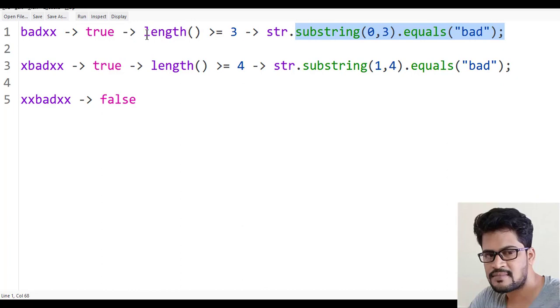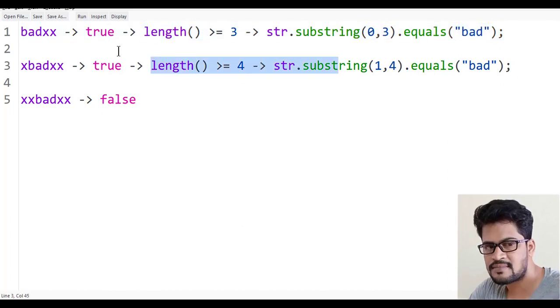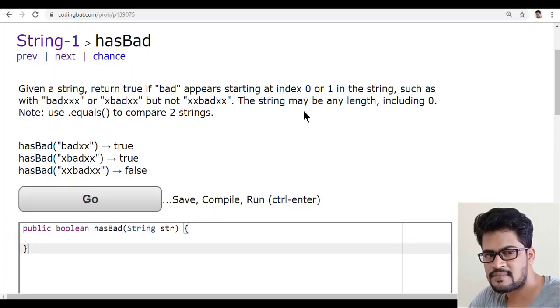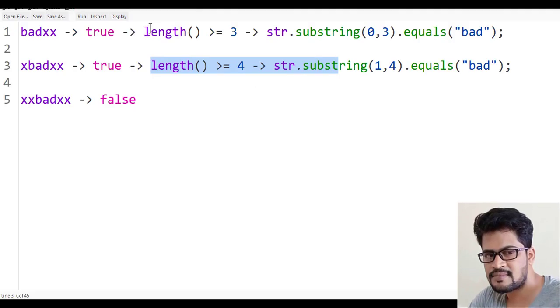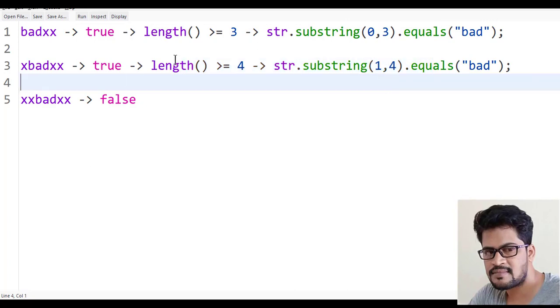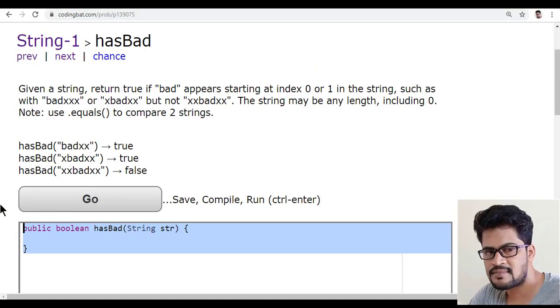This is the solution. You must check length and substring for either this or this, because we want to check starting at index zero or one. Let's write the answer. Let me copy this and go to Eclipse and paste.